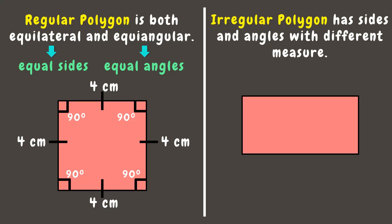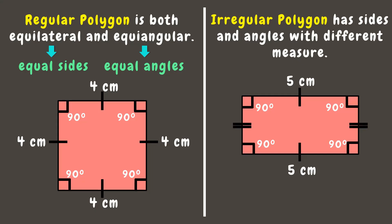For example, a rectangle, like a square, has four right angles, so it is equiangular. But a rectangle has only two pairs of equal sides — one pair is the length, so if one length is five centimeters, the other is also five centimeters. The width pair is also equal at two centimeters each. Since not all sides are equal, a rectangle is not equilateral, and therefore it is an irregular polygon.